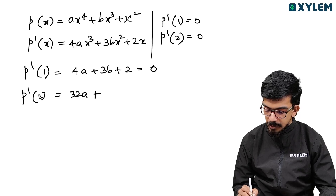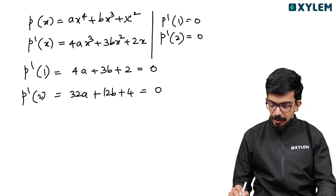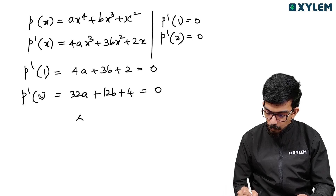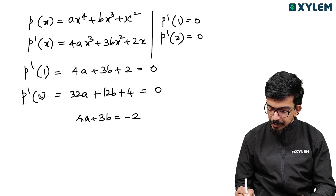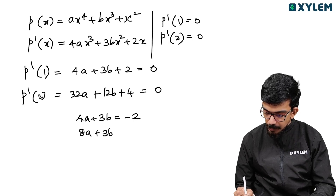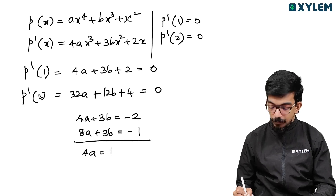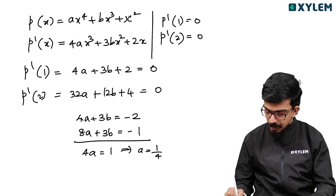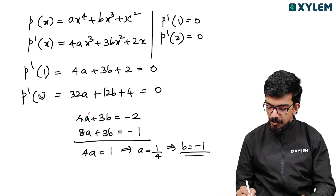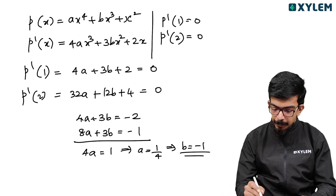Solving the system: equation 1 is 4a plus 3b equals minus 2, equation 2 gives 8a plus 3b equals minus 1. Subtracting equation 1 from equation 2: 4a equals 1, so a equals 1 by 4. Substituting back: b equals minus 1.